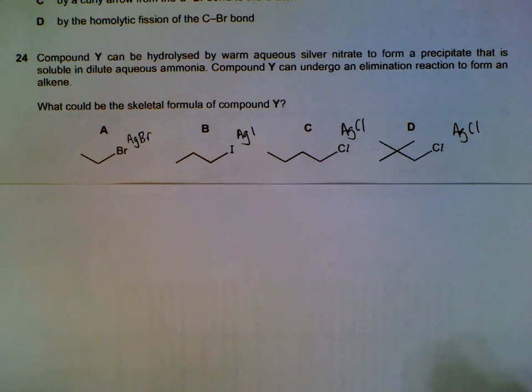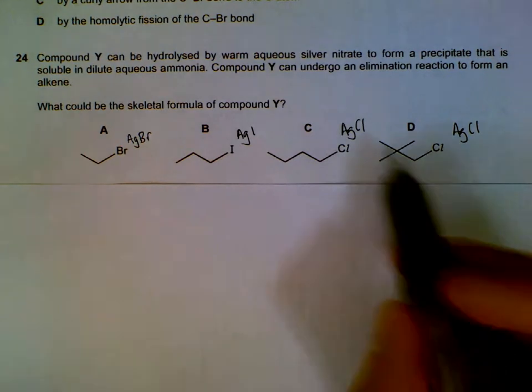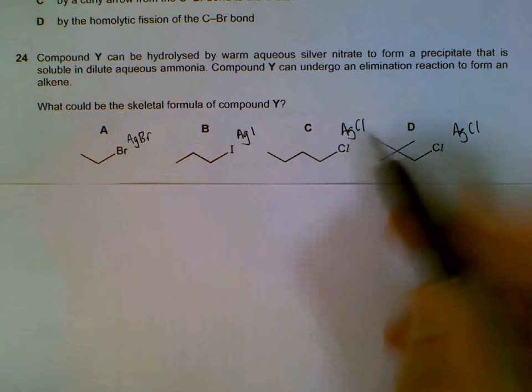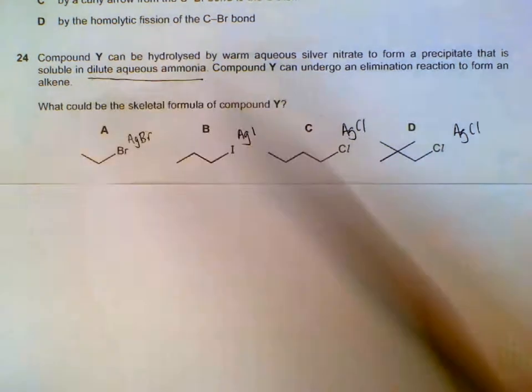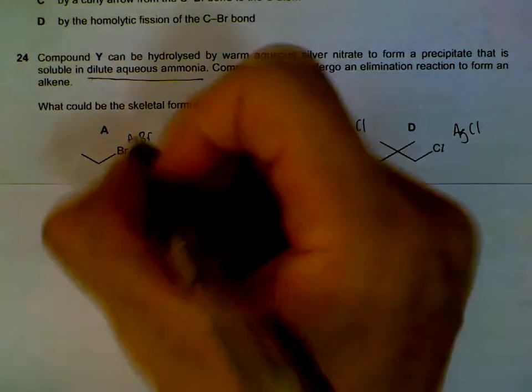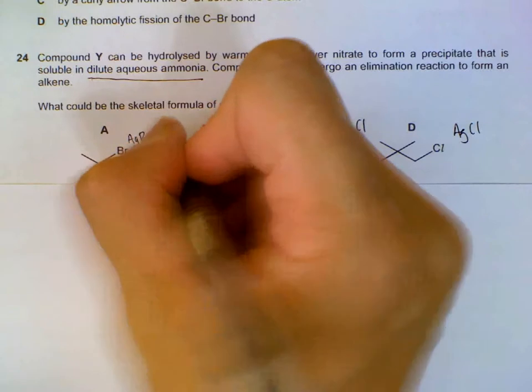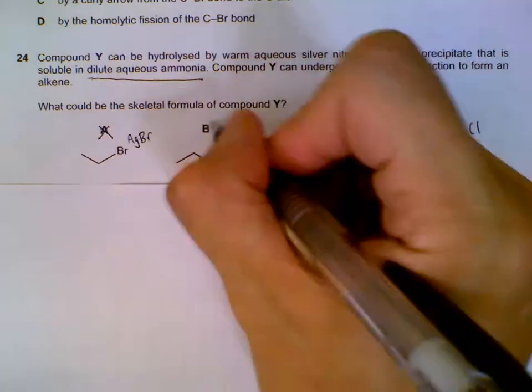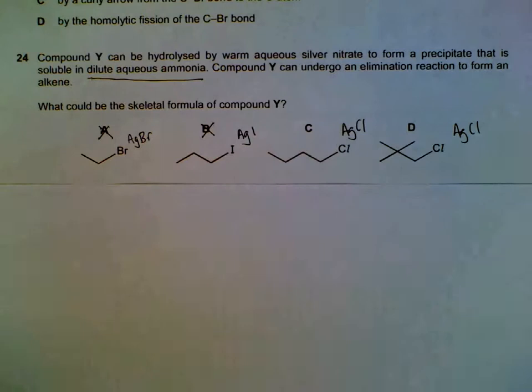The thing about these precipitates is silver chloride will be the one that can dissolve in dilute aqueous ammonia. Silver bromide will not be soluble, silver iodide will not be soluble in aqueous ammonia, so we are down to C and D.